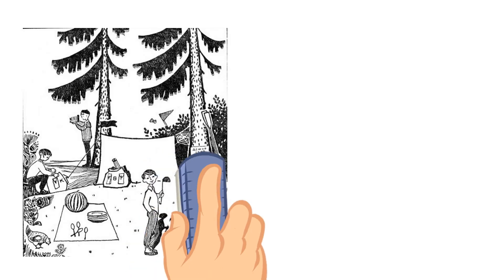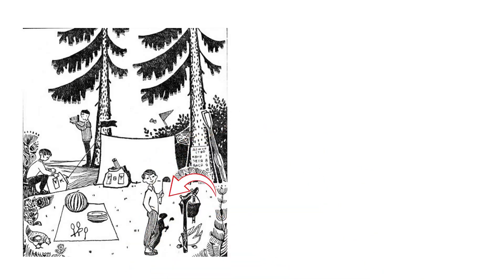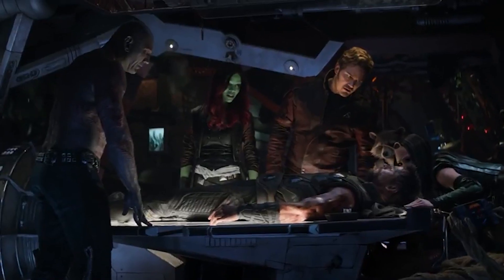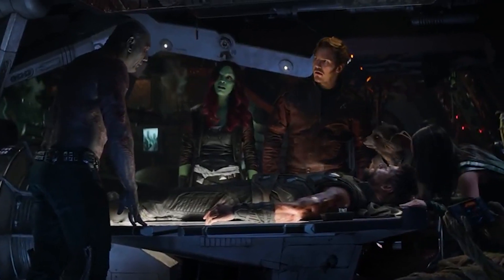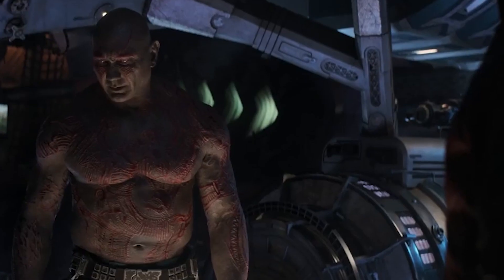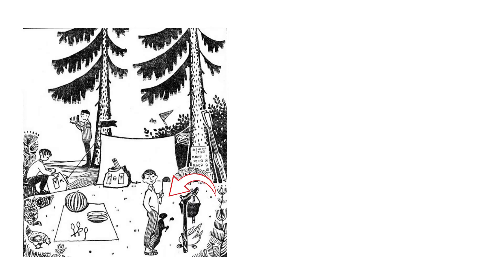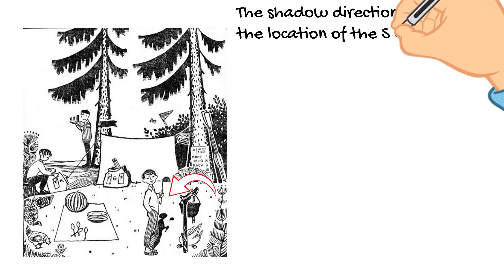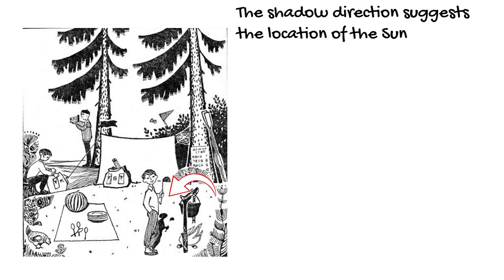However, some interesting details can be noticed when analyzing this dude. Take a closer look on his shadow. Which direction suggests the location of the sun? Indeed, if the shadow had come from the fire, the direction would have been different. In turn, the location of the sun has a direct relationship with the time of the day.